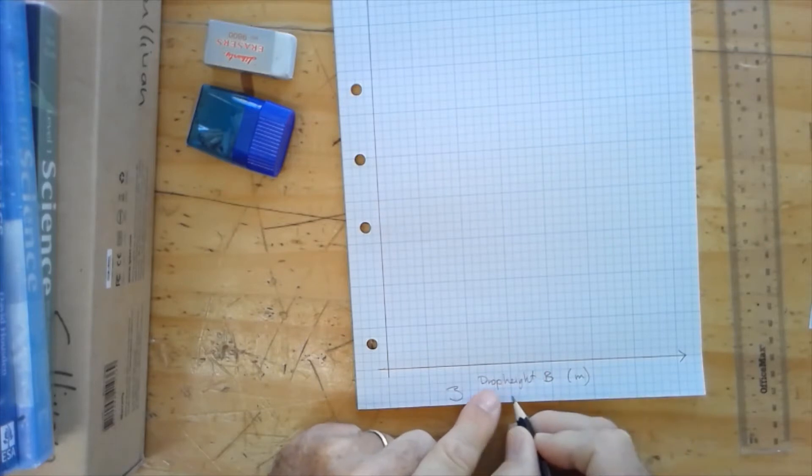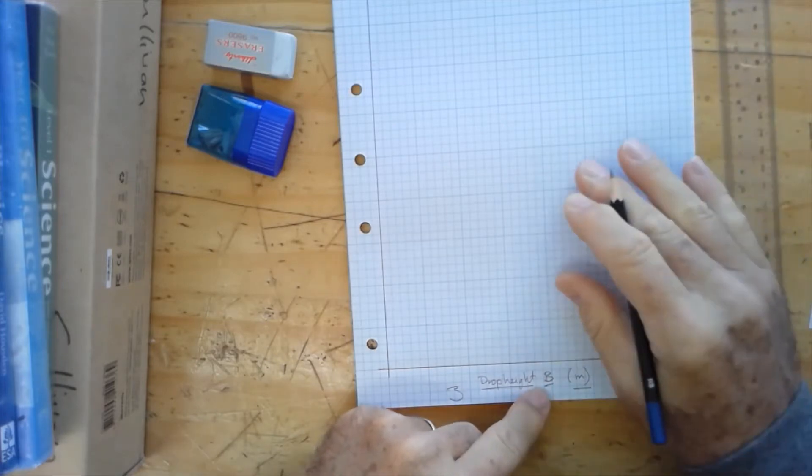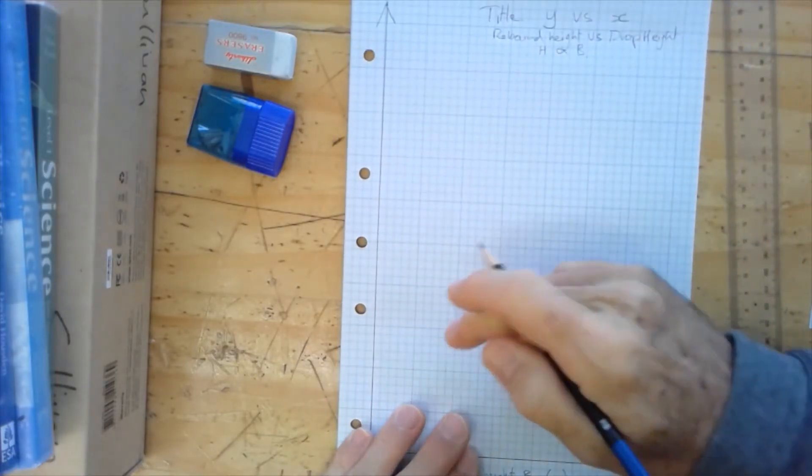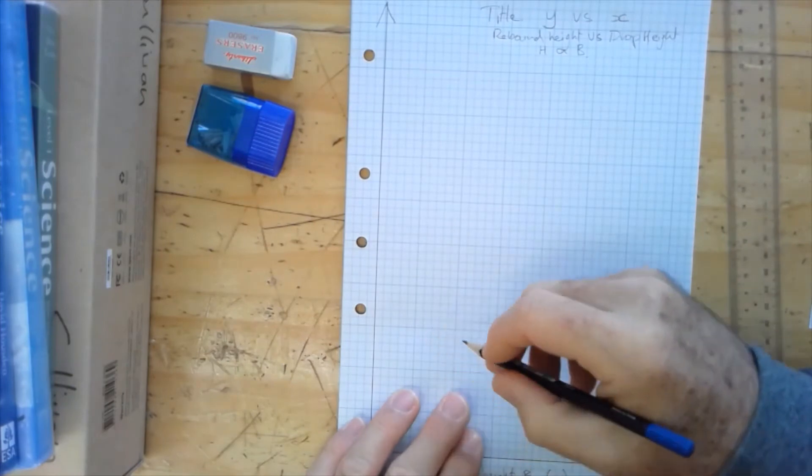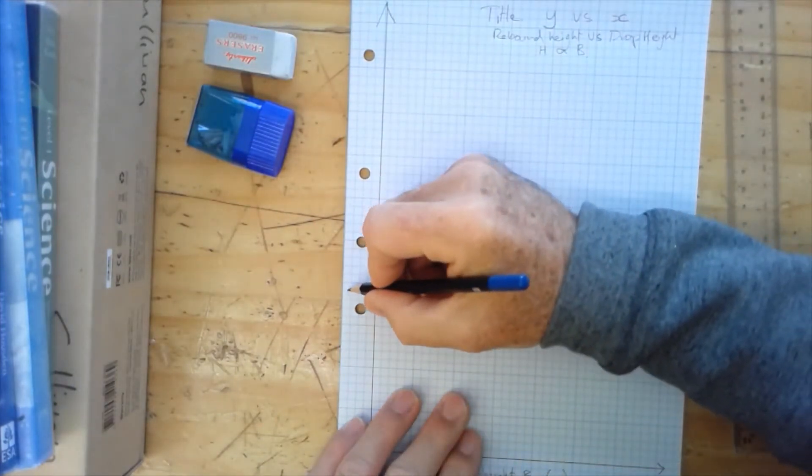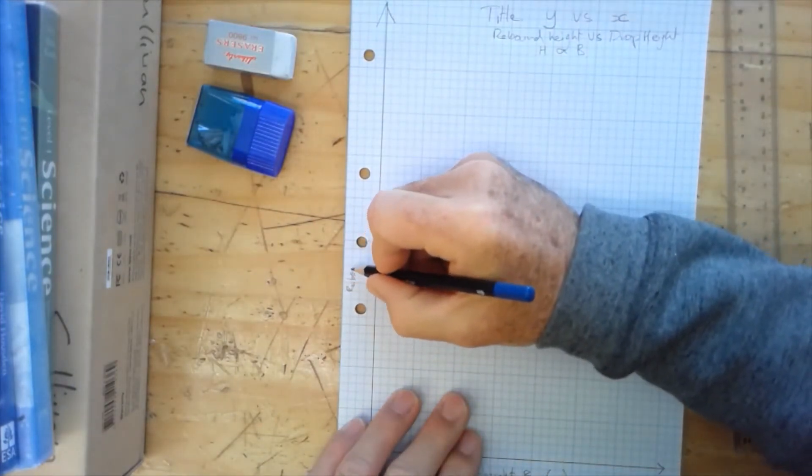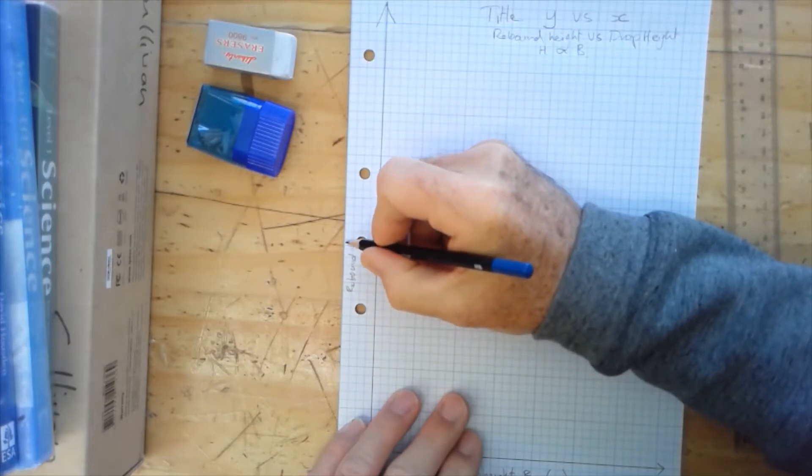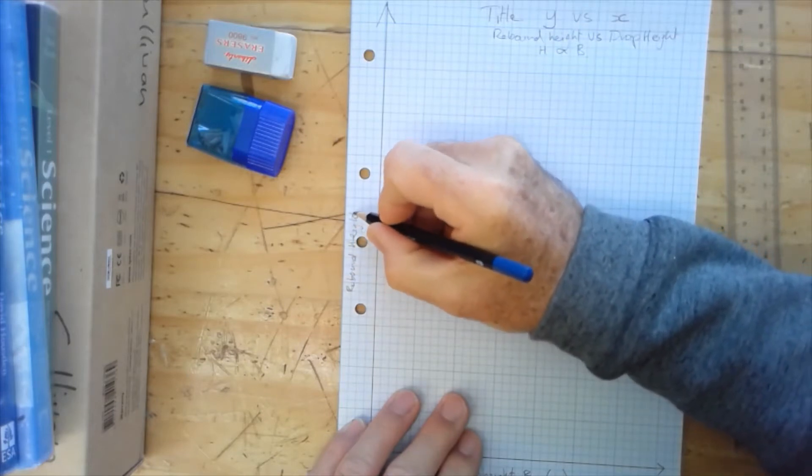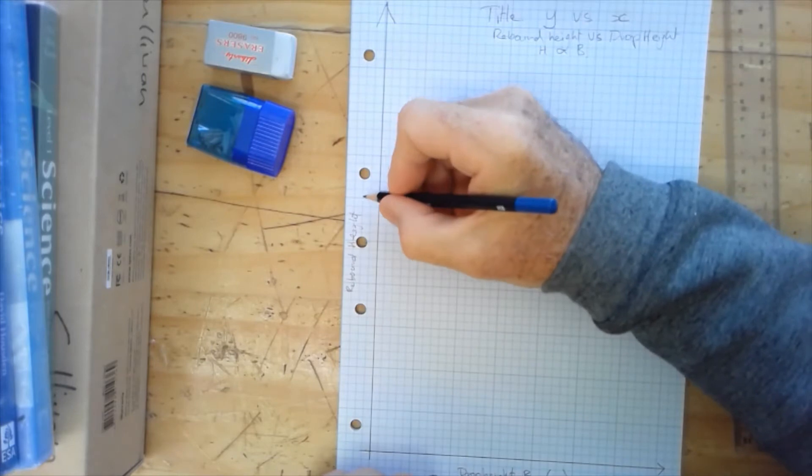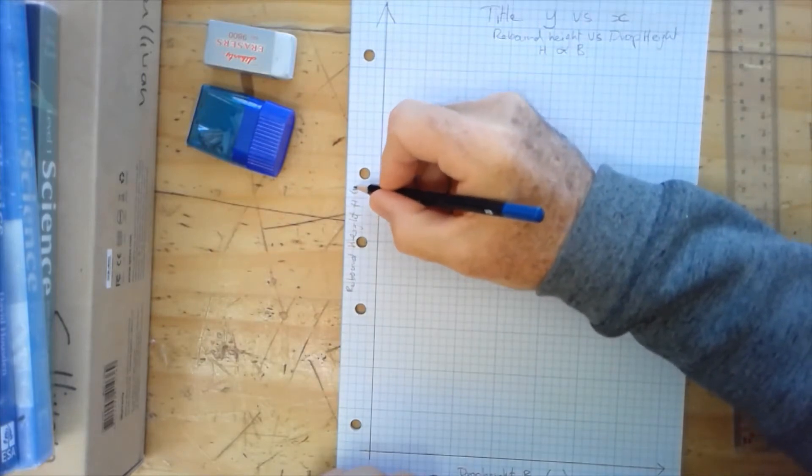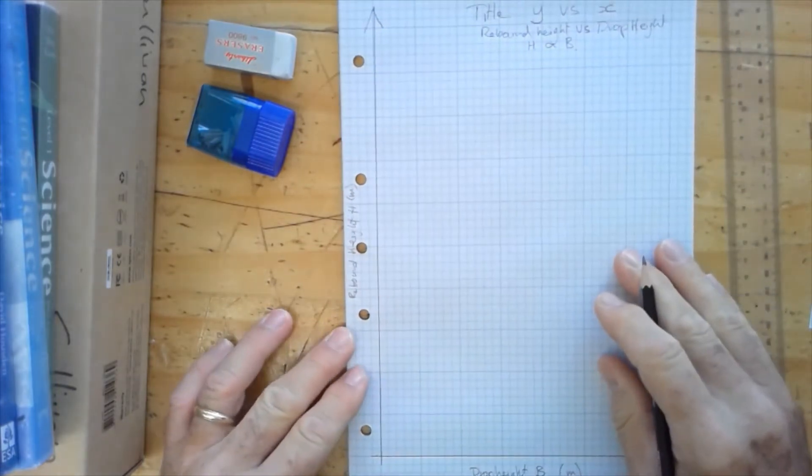So we don't have any prefix in front of this. So three things: the name of the variable, the symbol for the variable, and the units. And the same then on the dependent variable, we're going to have rebound height, and the symbol for that is H, and the units are again meters. So that's where we've started from.